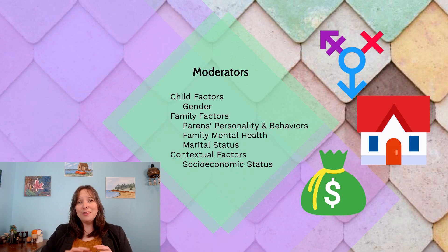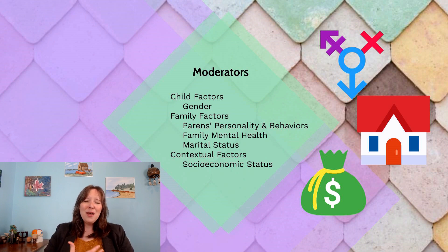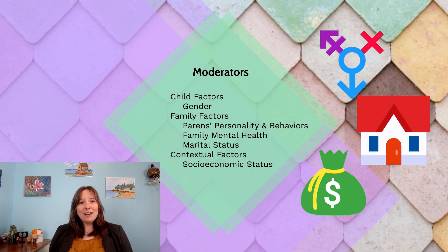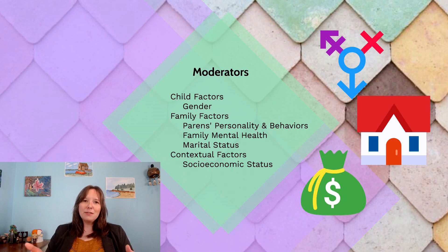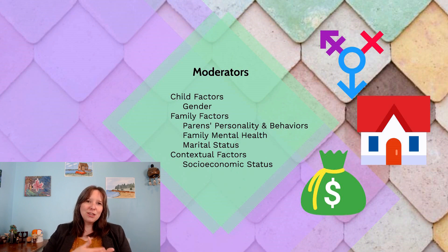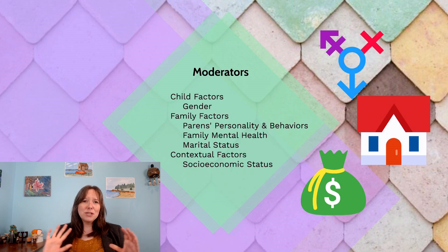We also know that the number of caregivers in a home and conflict in the home — relating to marital status, divorce, or single parenthood — can play a huge factor in how kids thrive. Especially if children are experiencing a divorce during their early childhood or early elementary years, that can definitely change the association between their temperament and outcomes.